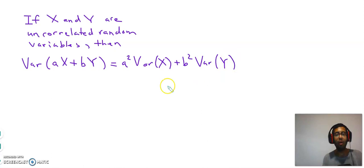So let's talk about it. What do you mean by x and y are uncorrelated variables? That just means the covariance of x and y is 0. That means when we say two random variables are uncorrelated, their covariance is 0.